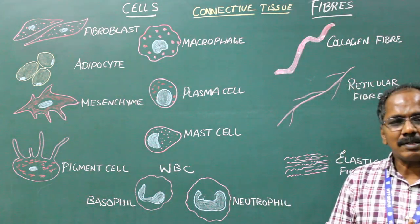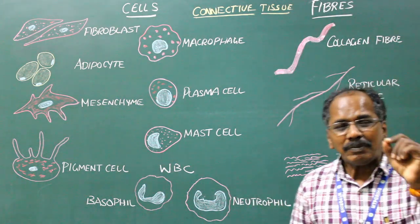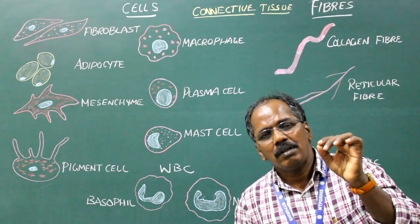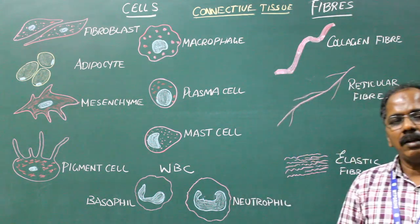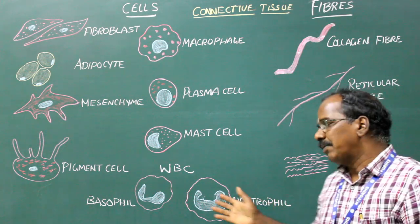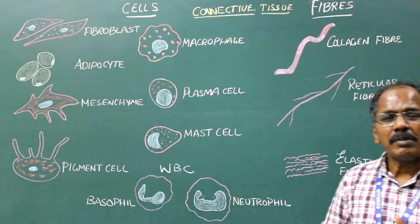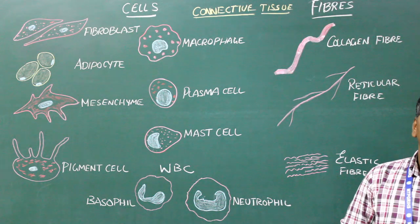White blood cells: They play an important role in the defense mechanism of the body. Examples: neutrophil, basophil, eosinophil and lymphocytes.